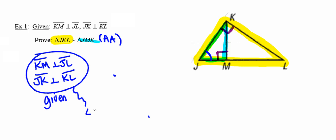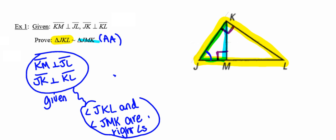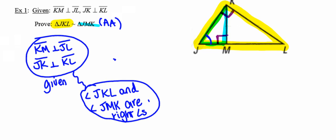That makes angle JKL and angle JMK right angles, because any time I have perpendicular lines, they form right angles.